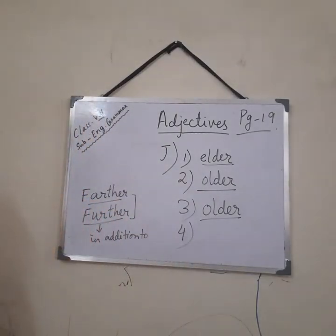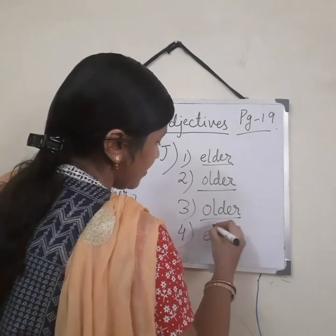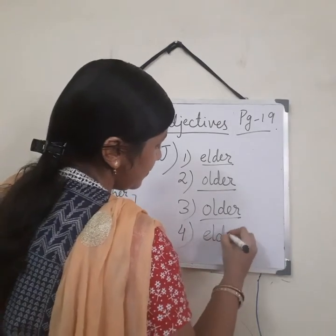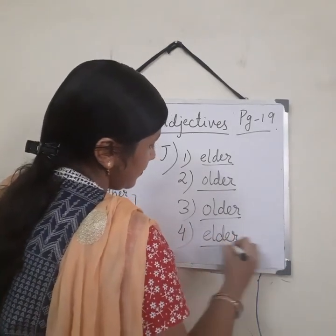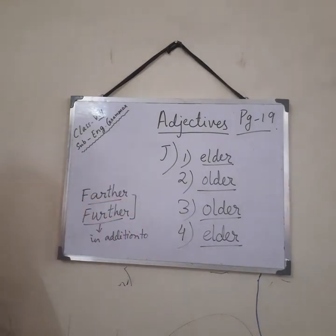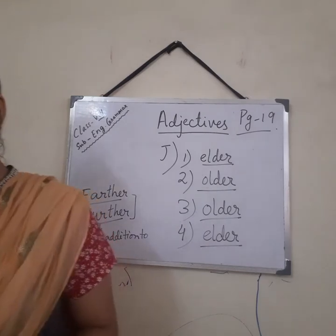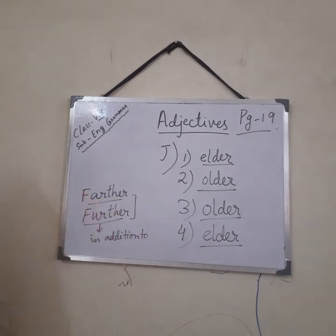Number 4: 'She is elder to her brother' — it will be elder because 'to' is given. So here is the solution of exercise J. If you write something else or have a confusion with any of the answers, you can ask me about it.